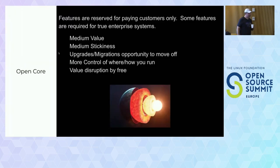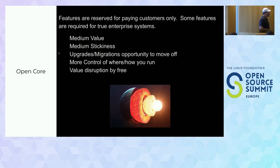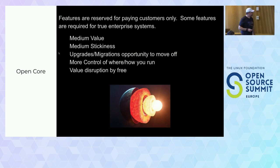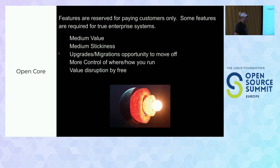Then people thought of open core — have an open source product, or at least something called open source, but build on top of it. That something typically turned into enterprise features: single sign-on, audit logging, regulatory compliance — all the things the CIO says they need. That had some success, but it generated a lot of frustration in the community. Because a lot of times a venture-funded startup would put the features you actually need to run it in production only in the proprietary side, making the free open source project have very little value — only suitable for experiments.